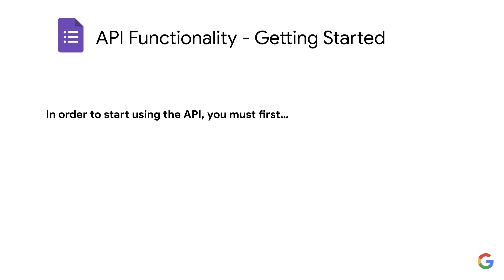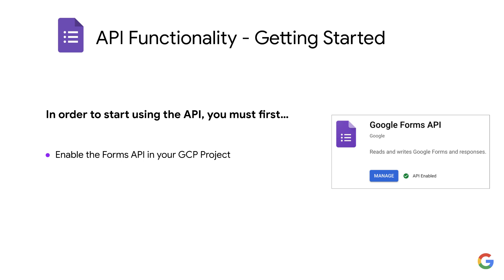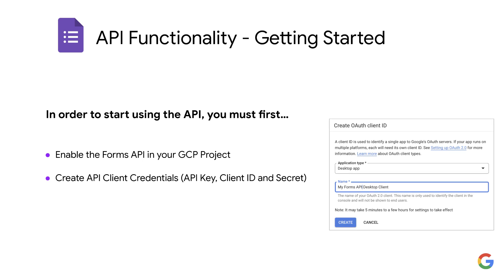In order to start using the API, you must first enable the Forms API in your GCP project, create API client credentials including an API key, client ID, and secret. These will be used for all subsequent requests to the API. For these steps, it's recommended to consult the Forms API setup guide in the API documentation.